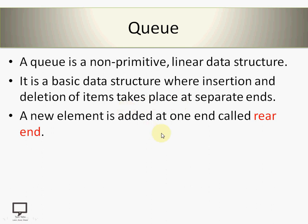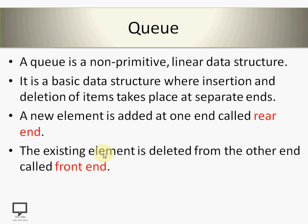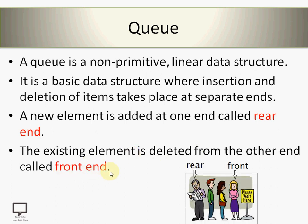The end at which an element will get added or inserted in a queue is called the rear end of a queue. The end at which elements are deleted from the queue, or service is provided to the element, is called the front end of a queue. Let me explain with an example.